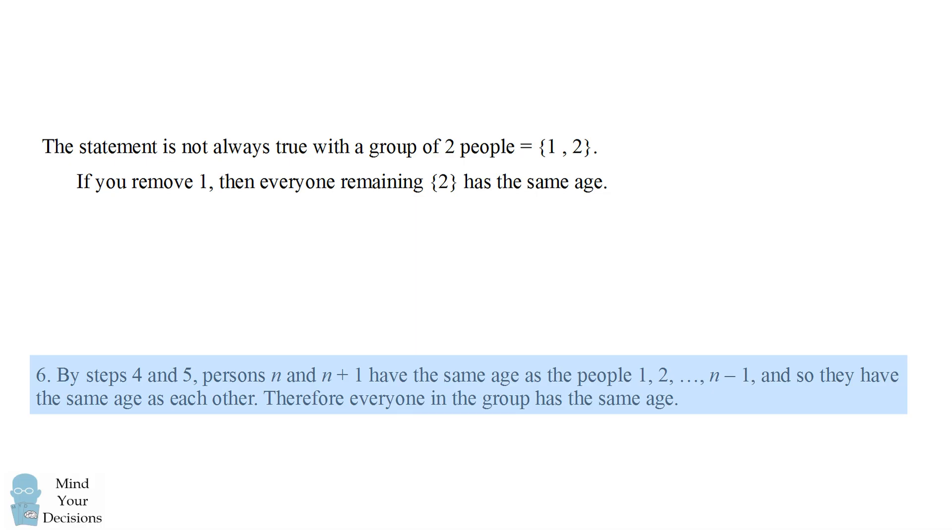And if you remove person 2, then everyone remaining, which is just 1, also has the same age. However, just because everyone else remaining has the same age, does not mean that 1 and 2 will have the same age as each other. Person 1 may have the age of 1, and person 2 may have the age of 2.